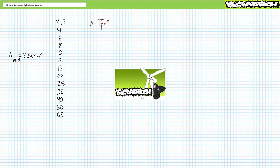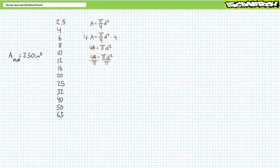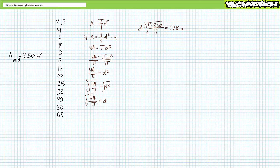Presuming you're skilled in algebraic manipulation, one solves for diameter in terms of area by isolating unknown diameter on one side of the equation using the following steps: multiply both sides by 4; divide both sides by pi; then square root both sides. We're ultimately left with diameter equals the square root of 4 times area over pi. Substituting the desired surface area of 250 square inches demonstrates a cylinder with a diameter of roughly 17.8 inches would do the trick.